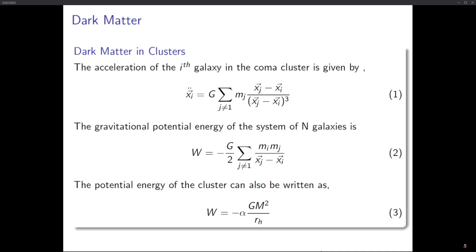One crucial assumption we need to make to proceed with the derivation is that the objects in the cluster move non-relativistically, at a speed very low compared to the speed of light. The radius of the cluster is much less than the horizon distance, and the velocity dispersion is also much less than the speed of light. So we can consider galaxies in the cluster to be non-relativistic and apply Newtonian laws of gravitation.